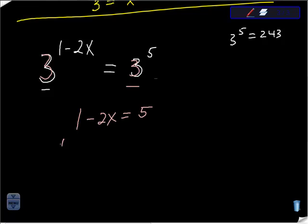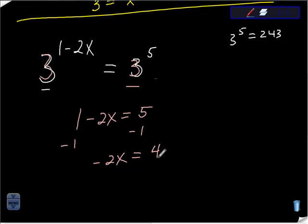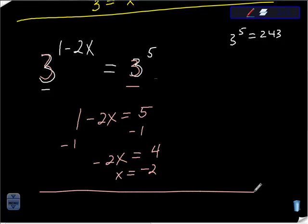With 1 minus 2x equals 5, I subtract 1 from both sides to get negative 2x equals 4, then divide by negative 2 to get x equals negative 2. This stuff is not that bad — I think it's very doable. Let me know if you have any questions or comments. Thanks for watching!